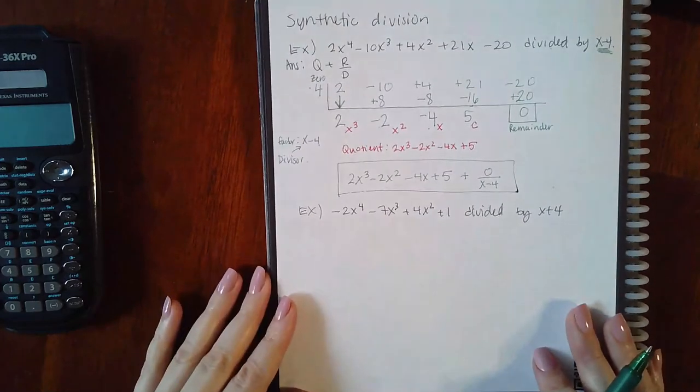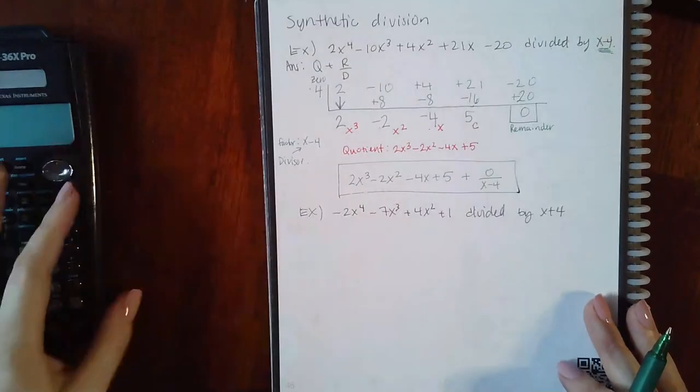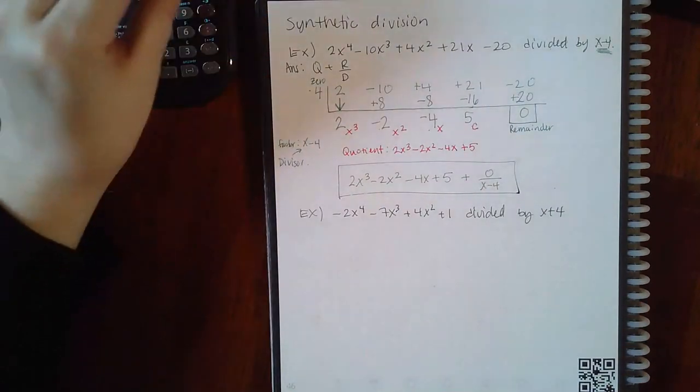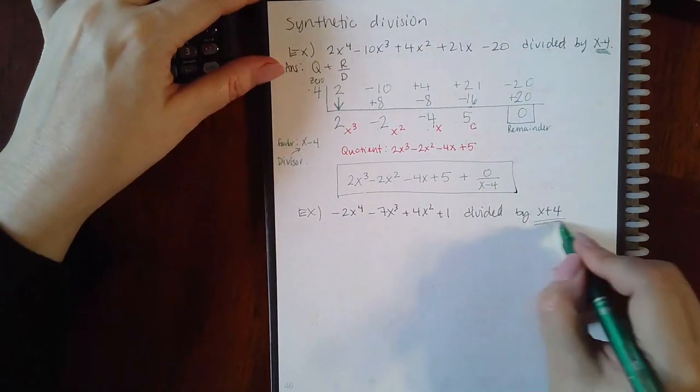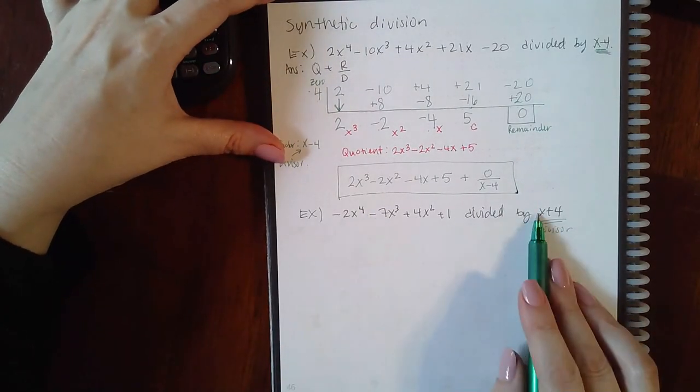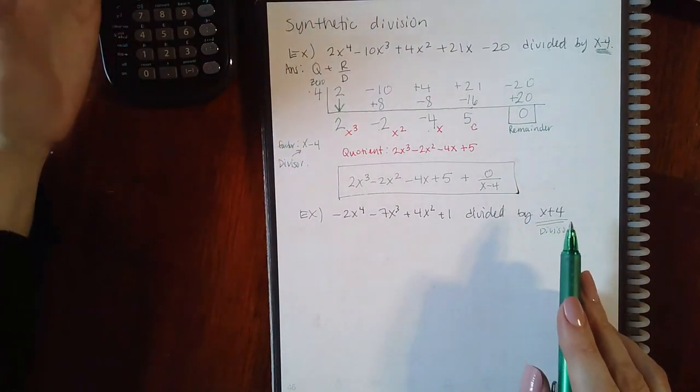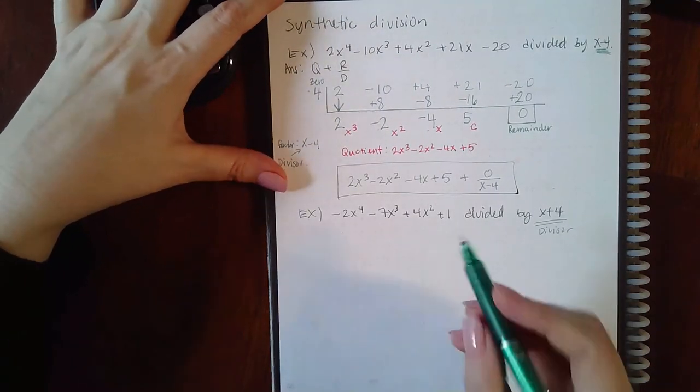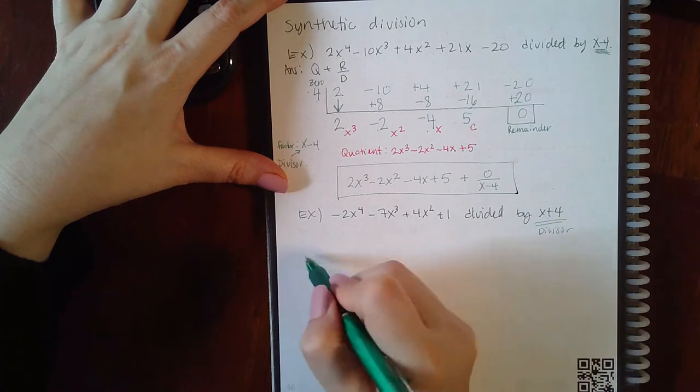Let's try another one, but it'll go a little bit faster because we've already talked about where the divisor, remainder, and quotient are coming from. This is my divisor. If I take x to the fourth divided by x, I should end up with x to the third. The zero there is actually negative 4.